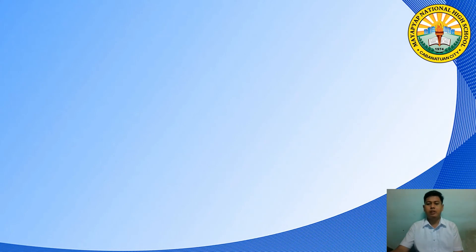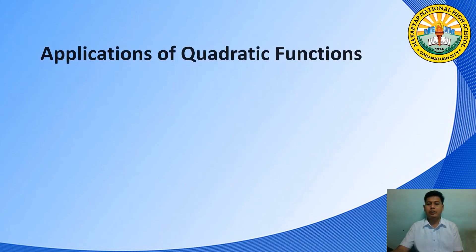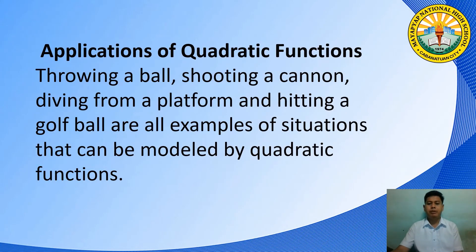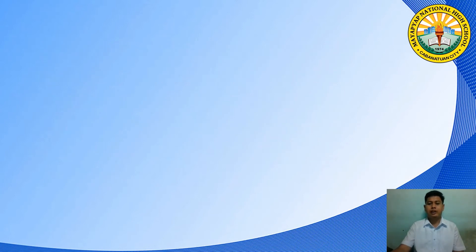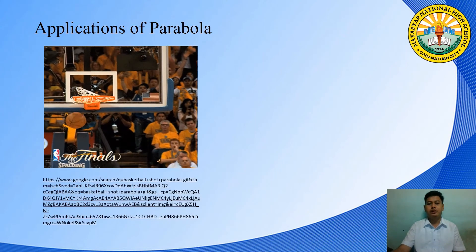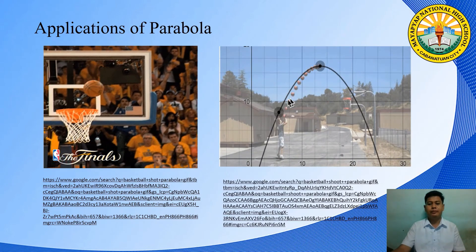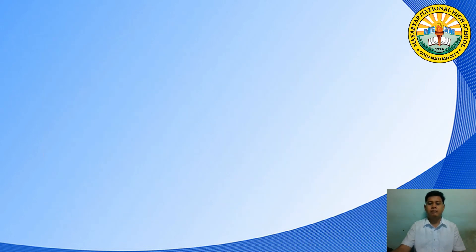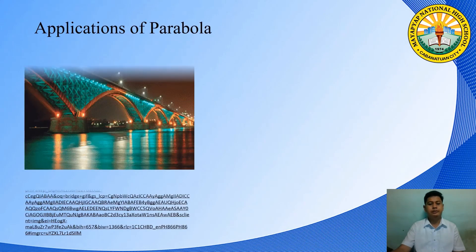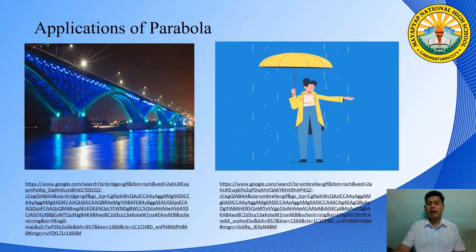Drawing a ball, shooting a cannon, diving from a platform, and hitting a golf ball are examples of situations that can be modeled by quadratic functions. Other examples of applications of quadratic functions are shooting a ball, a bridge, and an umbrella.